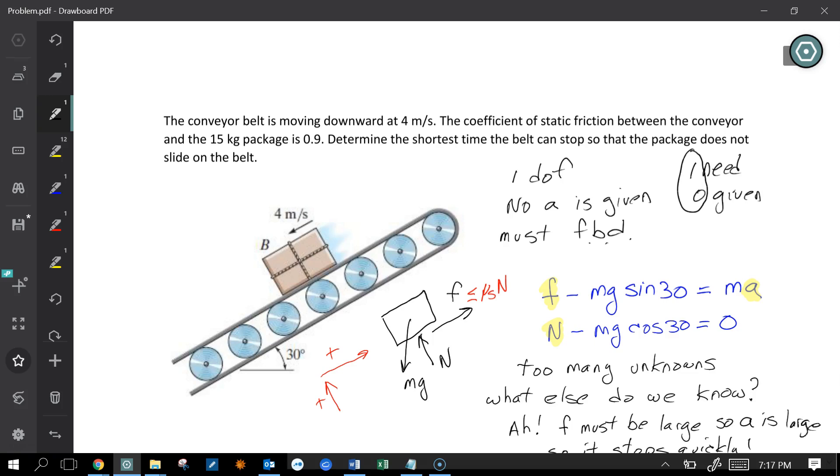So you ask yourself, should you draw the free body of the belt? Should you draw it of the crate? Should you draw it of both? What should you do? Well, if you think about that belt, there's a whole bunch of rollers. There's all kinds of outside things touching that. I do not want to draw that. So I'm going to try the box.